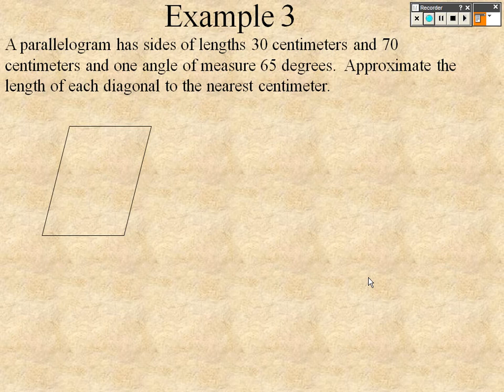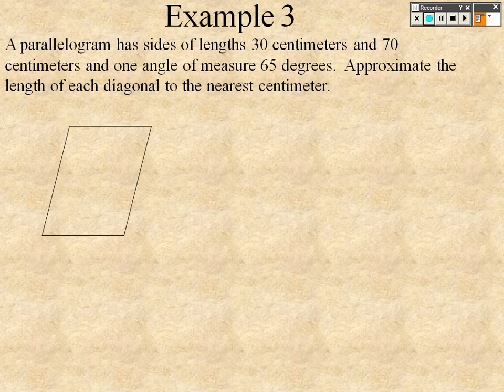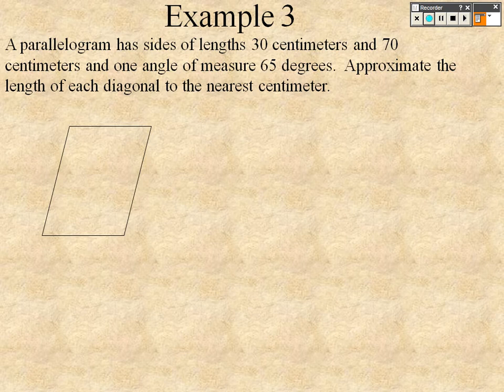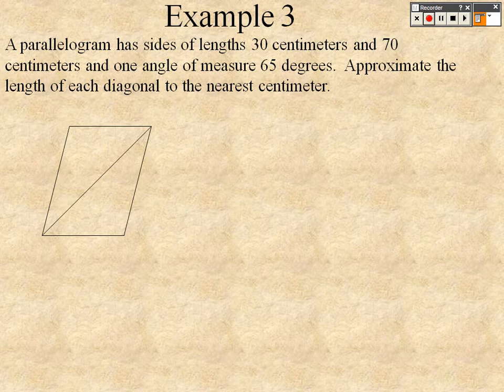Alright, so continuing here with 6.5, law of cosines for trig here. We've got example 3. It says a parallelogram has sides of lengths 30 and 70 centimeters, and one angle of measure is 65 degrees. Approximate the length of each diagonal to the nearest centimeter.